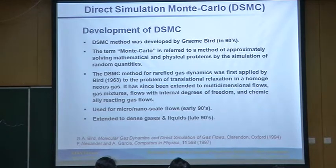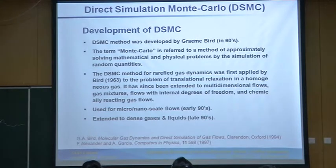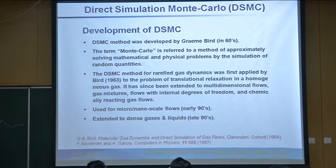In the DSMC method, how we use random numbers will become clear very soon. In the 1960s it was applied to the problem of translational relaxation in a homogeneous gas. Since then it has been extended to multi-dimensional gas flows, multi-species gases with internal degrees of freedom, and chemically reacting gas flows. Professor Bhandarkar will talk about chemical reaction modelling in the DSMC framework tomorrow.